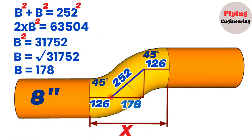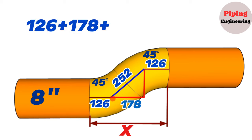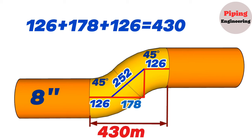Now let's add these three distances together. 126 plus 178 plus 126 equals 430. So we calculated and found that the end-to-end distance of the two 45-degree elbows in this pipeline equals 430 millimeters.